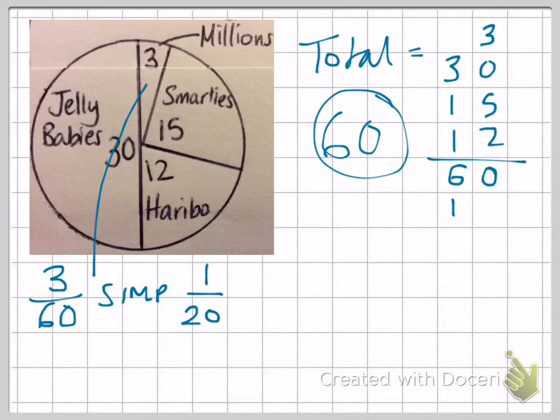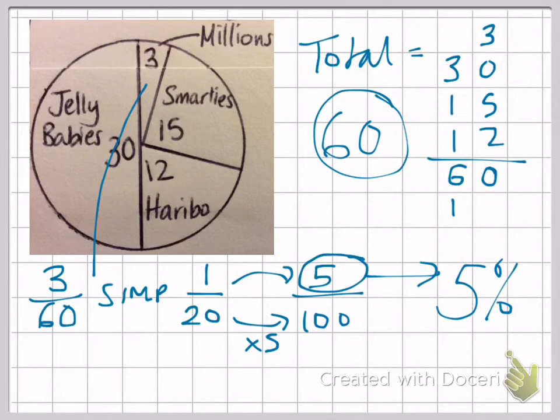So from here, we can change that into a fraction over 100 by multiplying the top and the bottom by 5. So we get 5 over 100. As soon as you've got a fraction with 100 as the denominator, this becomes your percentage. We can say 5% of children like Millions.